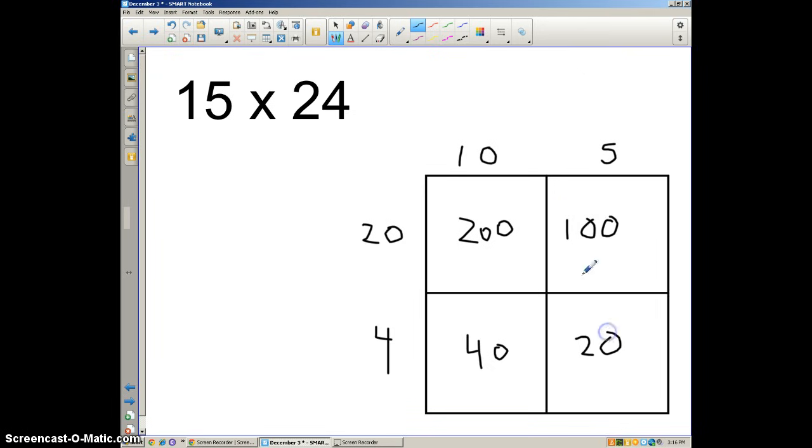So then we have each of these sections. The area of this section is 40, the area of this section is 200. We add up all of these sections together, we'll get the total value of this rectangle, which is a representation of 15 times 24. So we just take those parts: 200 plus 100 plus 40. Sorry about my handwriting. And we add those all up, and we're going to have here 360.